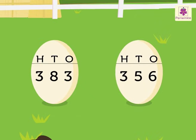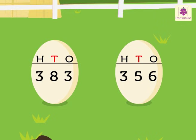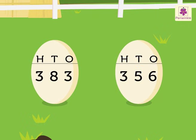Now look at the numbers 383 and 356 on the eggs. First, compare the digits in the hundreds place. As the digits in the hundreds place are the same in both numbers, we compare the digits in the tens place, that is 8 and 5. Here, 8 is greater than 5. Thus, we say 383 is greater than 356.